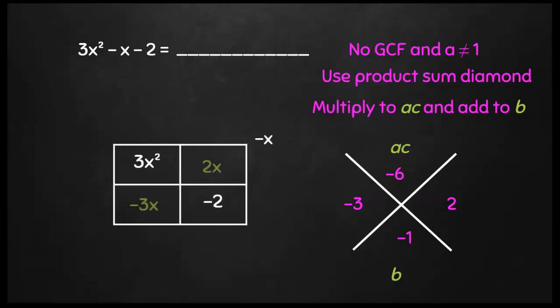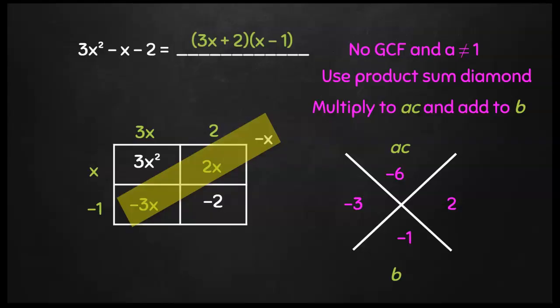Those two numbers are going to go inside my box, allow me to figure out what should go on the outsides of my box. To complete my factors, I have x minus 1 and 3x plus 2.